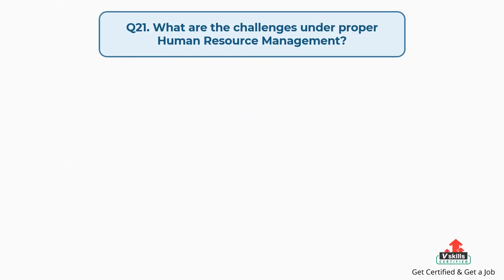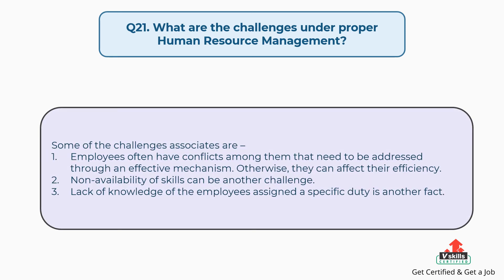Question number 21: what are the challenges under proper human resource management? The answer is, some of the challenges are: first, employees often have conflicts among them that need to be addressed through an effective mechanism, otherwise they can affect efficiency; second, the unavailability of skills can be another challenge; third, the lack of knowledge of employees assigned a specific duty is another factor.